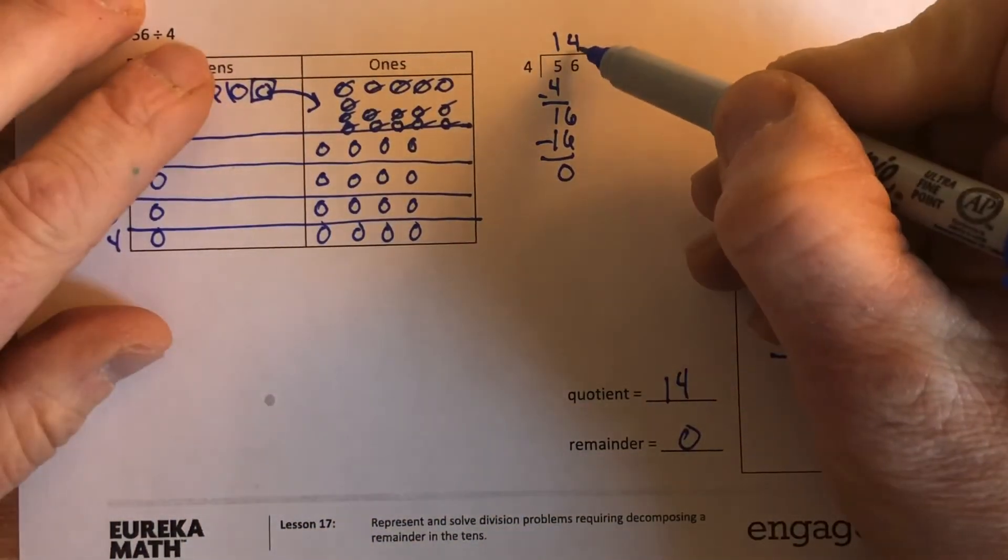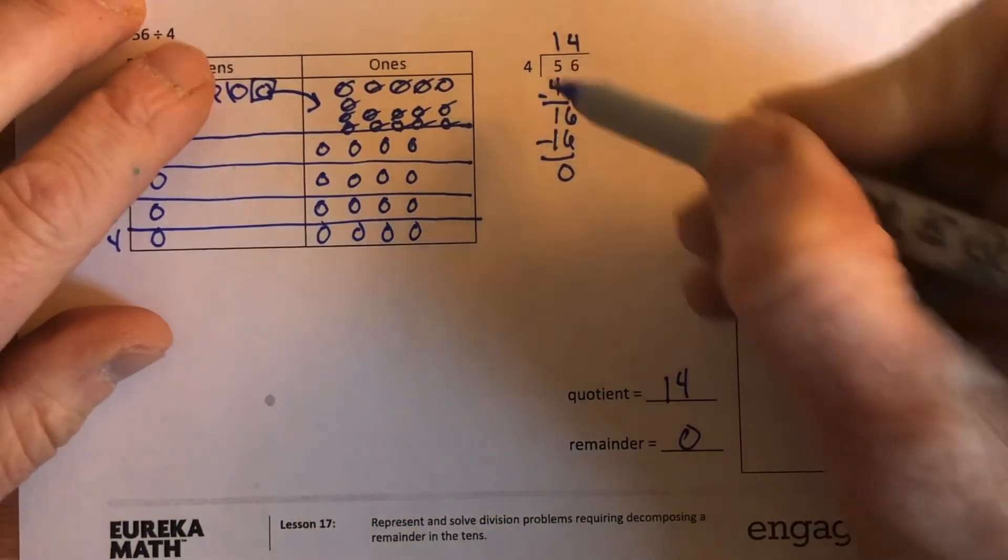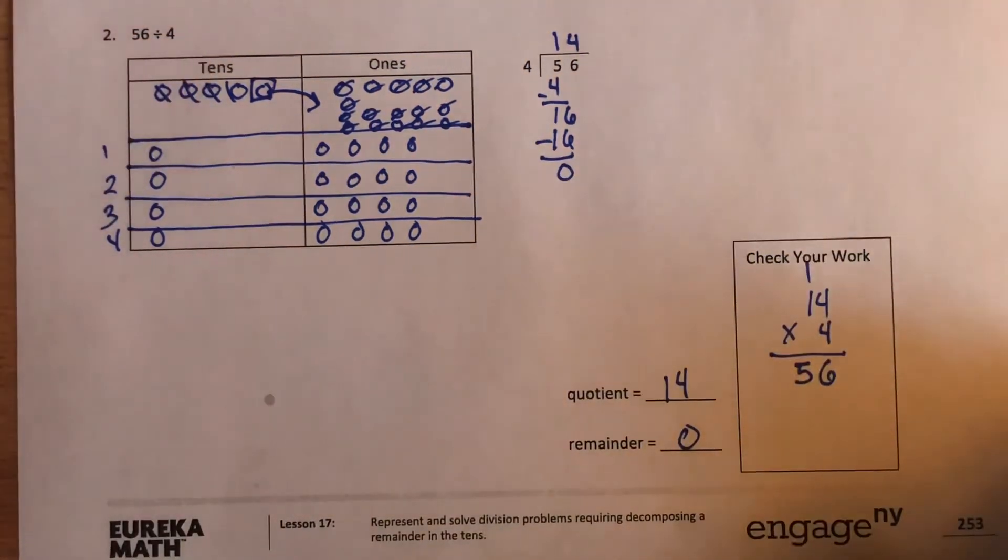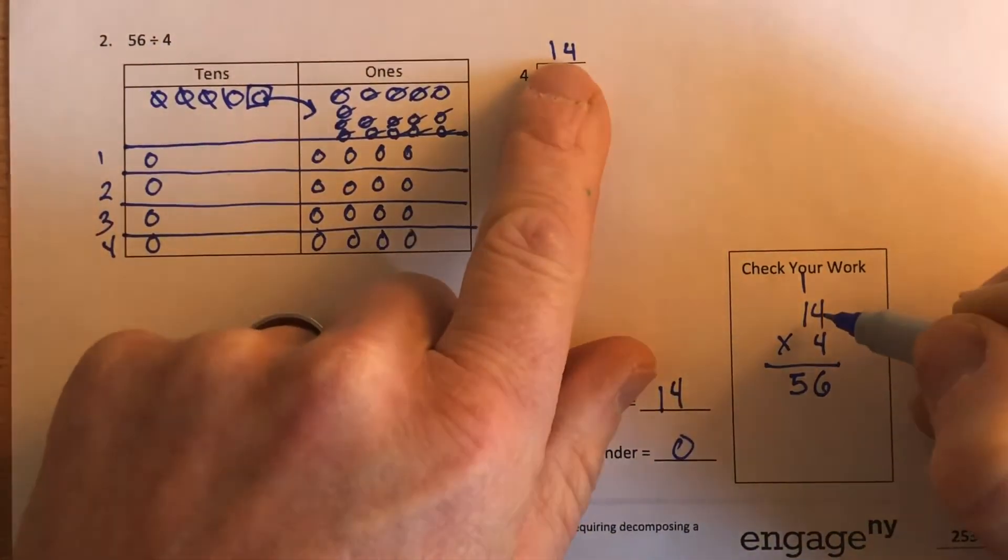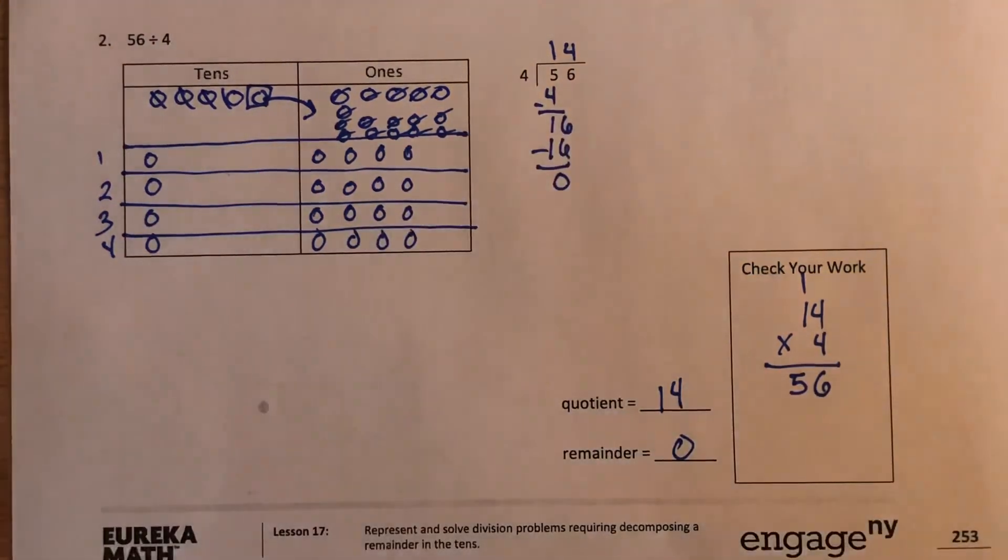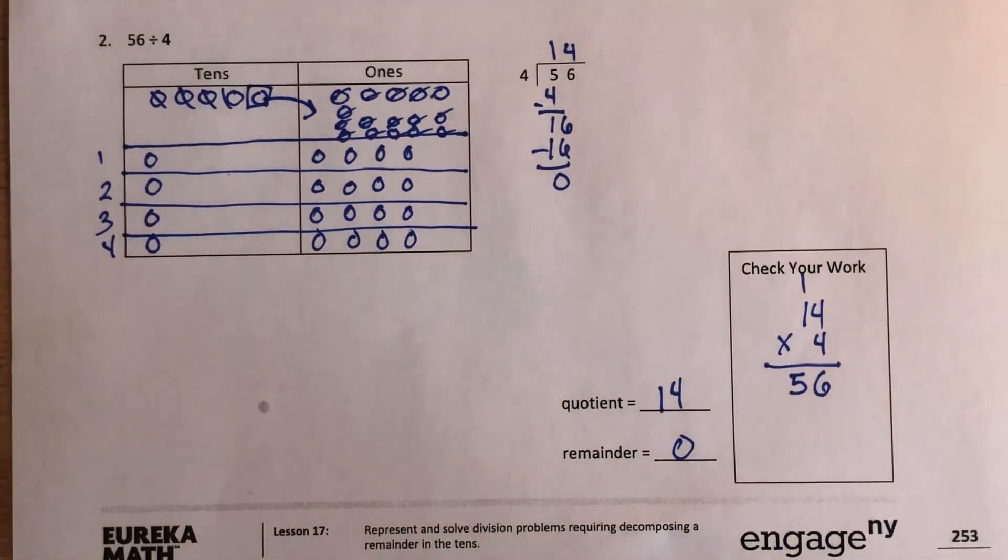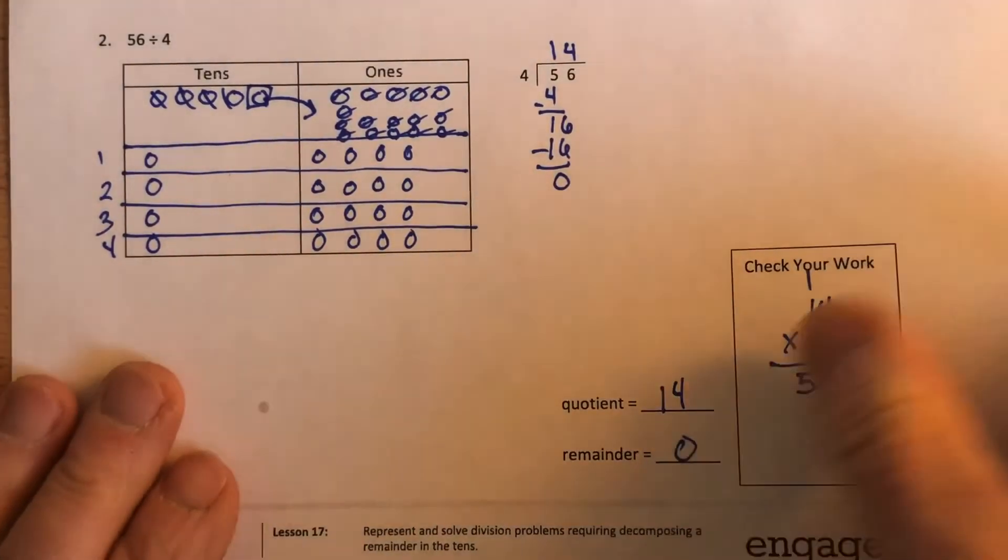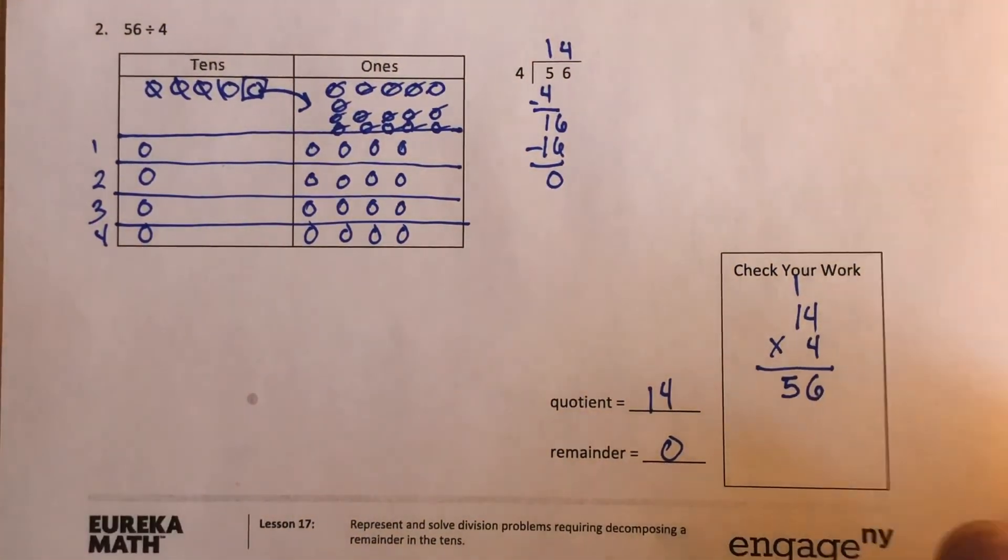Four times four is 16, I subtract I get zero. I check my work down here. 14 times four equals 56. All right, hopefully you did okay with this. Teachers please add anything to this that you wish. All right, hang tight, we'll be back with our I can statement.